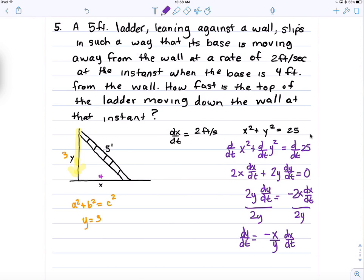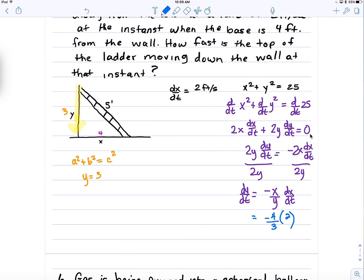Last step. Plug in any of your known values that were given. What was given to us? dx/dt. So, also, we can plug in our value for x and our value for y because we know that. So, what was x? 4. What is y? 3. And what about dx/dt? 2. So what we found is that the ladder, the top of the ladder is moving at negative 8 thirds feet per second. At that particular instant.